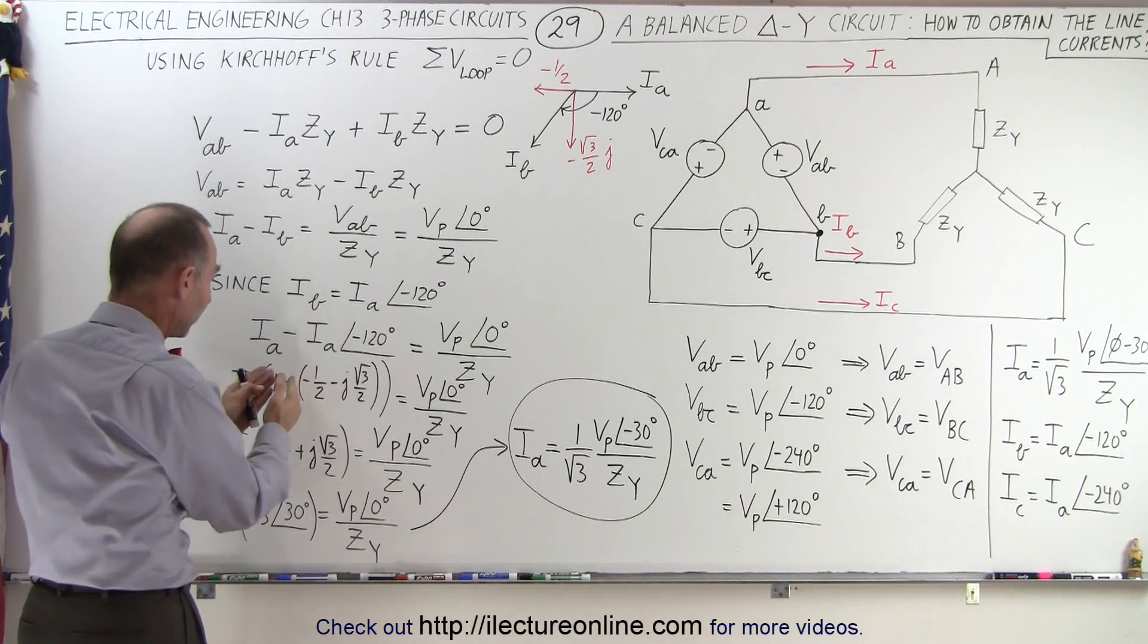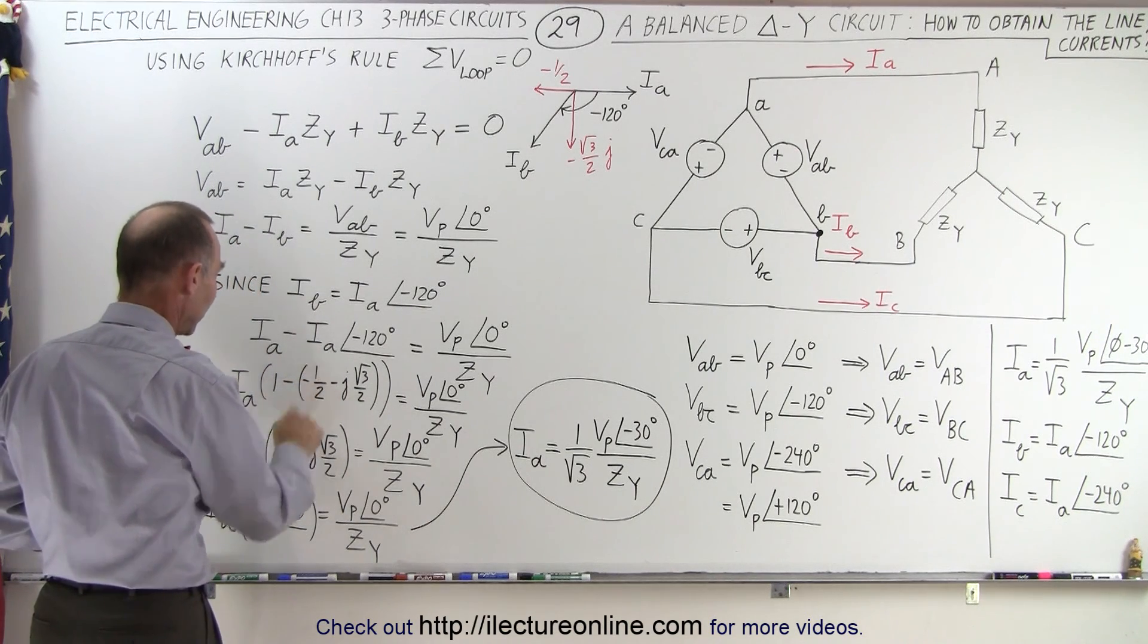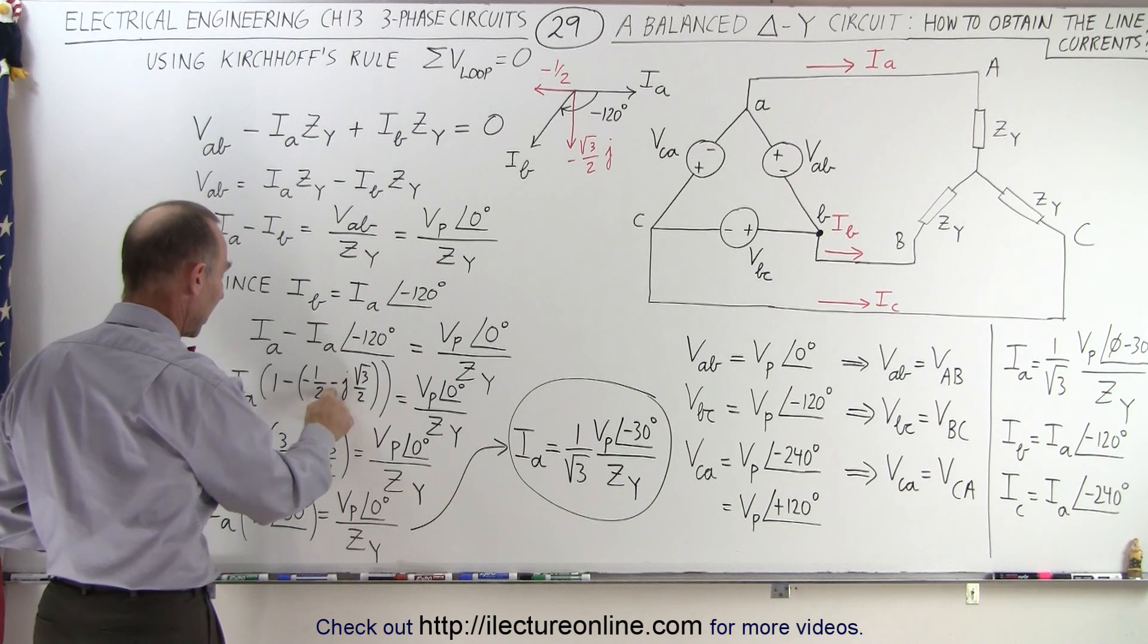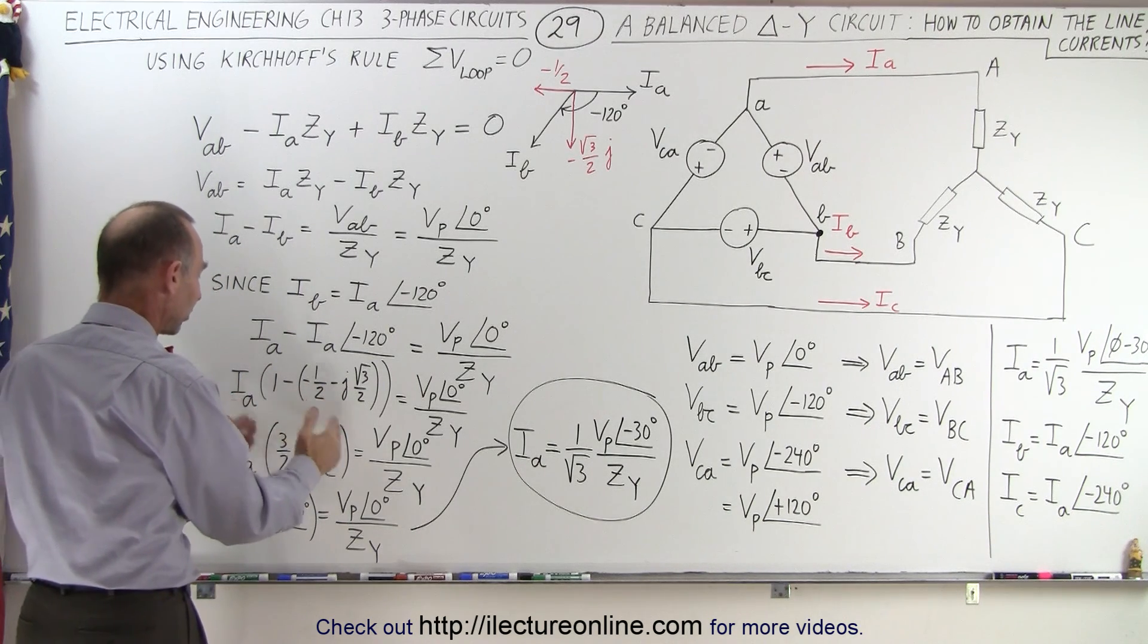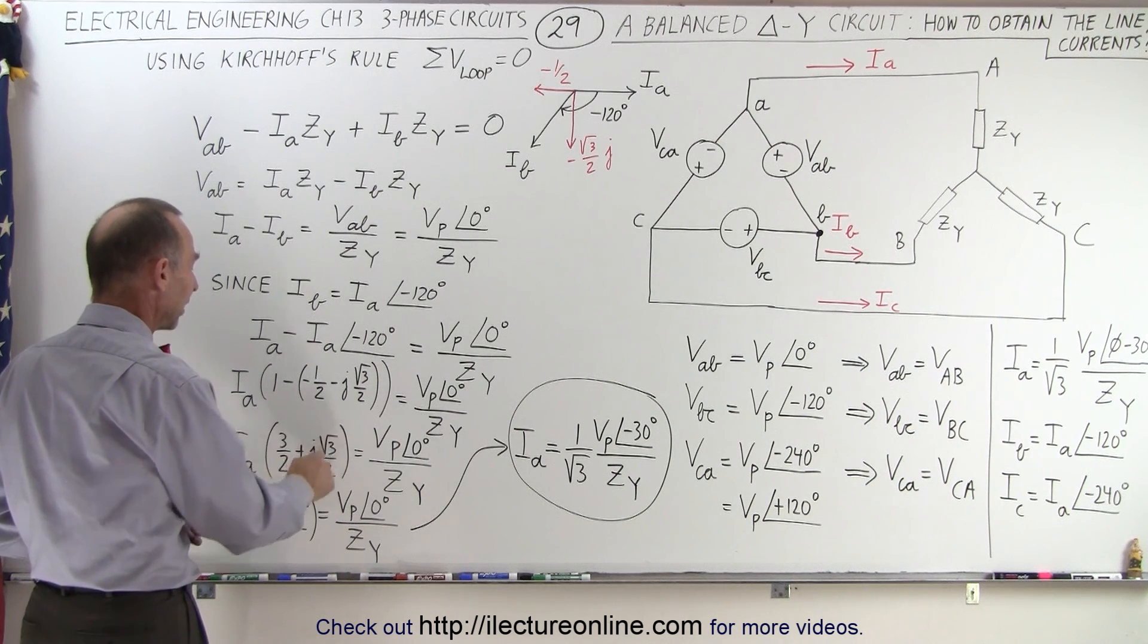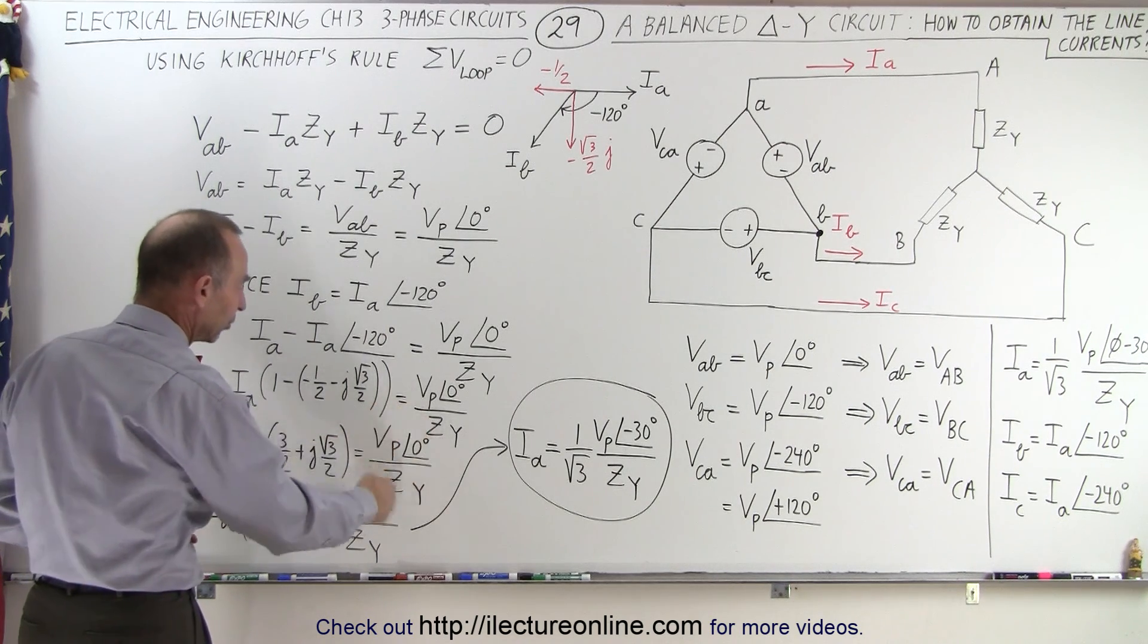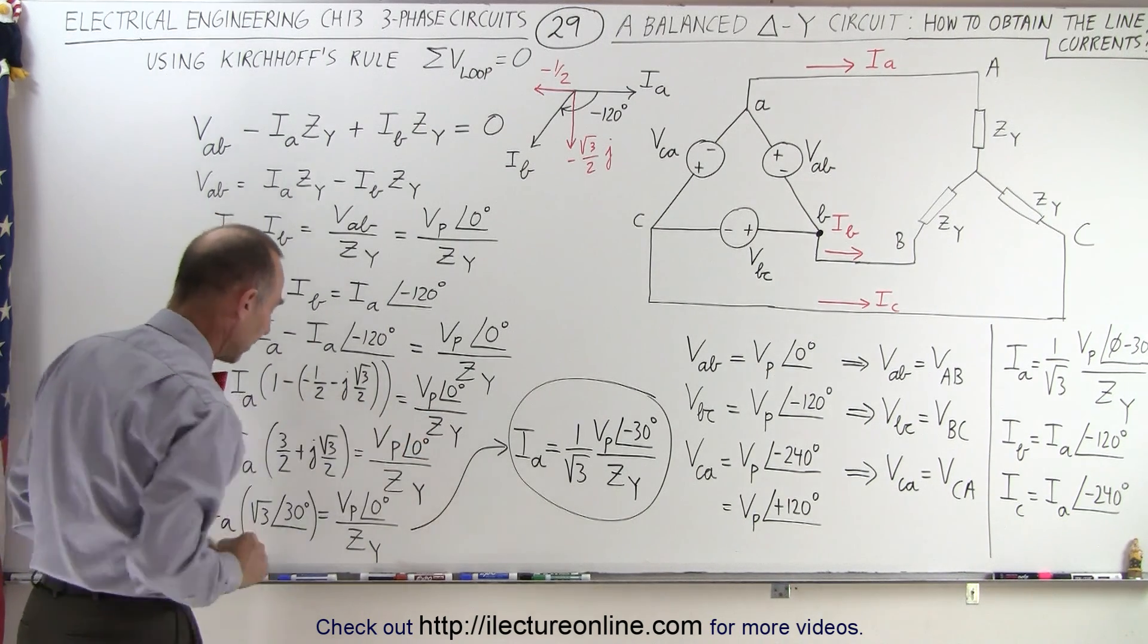So then we can add the real parts together. 1 plus 1 half is 3 halves, and the minus times the minus gives us a plus. So now we have IA times the quantity 3 halves plus J times the square root of 3 over 2, is equal to the right side, the phase voltage divided by the impedance.